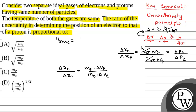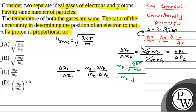Now, the RMS speed of molecules of an ideal gas, v rms, is given by root over 3RT by M. So the ratio becomes mass of proton into root over 3RT by mass of proton, divided by mass of electron into root over 3RT by mass of electron. This simplifies to root over mass of proton by mass of electron, which is option B.